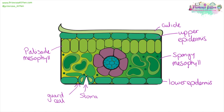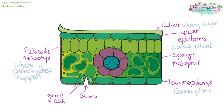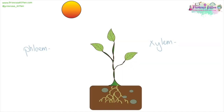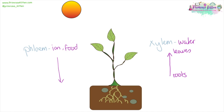Here we have a cross-section of a typical leaf. Our palisade mesophyll is where photosynthesis is going to take place. The cuticle is the waxy layer. Upper and lower epidermis cover the plant. Spongy mesophyll is a space for gas exchange. And the guard cell and stomata is where transpiration takes place. Inside the plant, we have the xylem and the phloem. The xylem is going to carry water generally in an upwards direction, from the roots where it is collected to the leaves where it can be used in photosynthesis. And the phloem carries ions and food, generally in a downwards direction — from the leaf where food can be made in photosynthesis, to the roots where it can be stored, for example in potatoes.